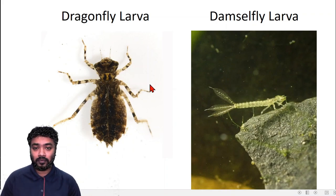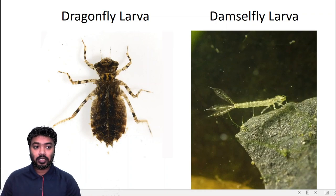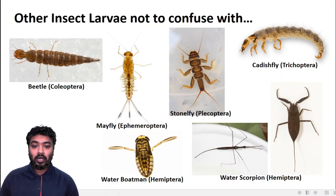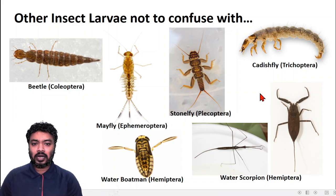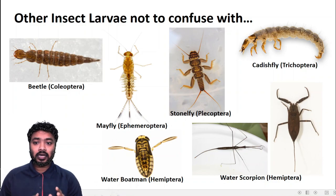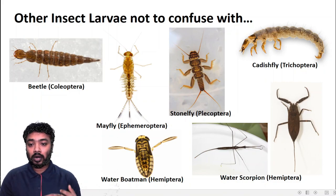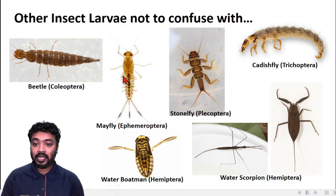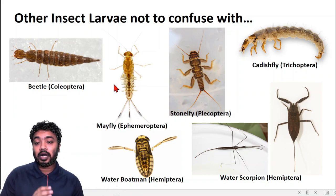When you go for identification or collection in any water body, it's not that only dragonfly or damselfly larvae will be there — there will be many other larvae. The mayfly larva is very similar to the damselfly larva, but there are differences. Mayfly larvae also have similar caudal appendages, three in number, but they have abdominal gills with visible abdominal appendages. In damselfly larvae, one family has similar projections — that is the Euphaeidae family.